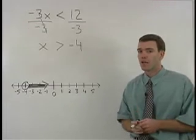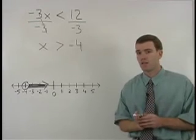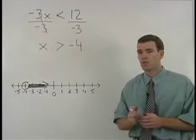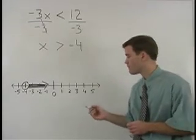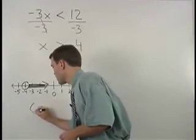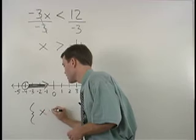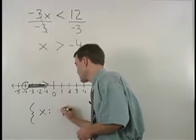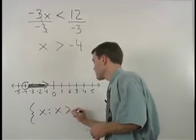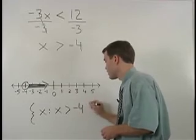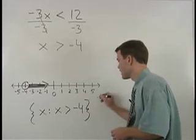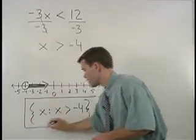Finally, we put our answer in what is called set notation, which is written in the following way: the set of all x's such that x is greater than negative 4. This is our final answer.